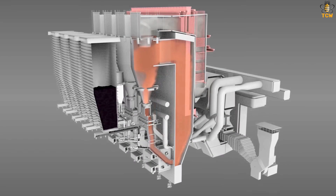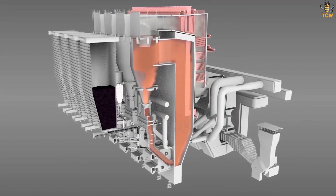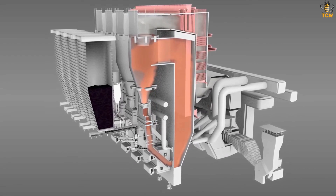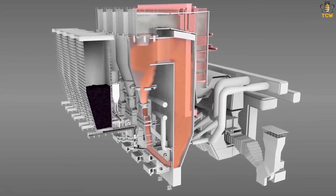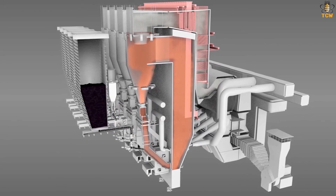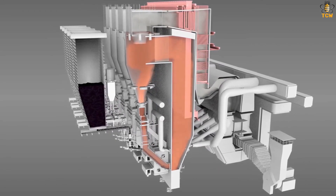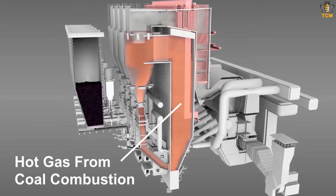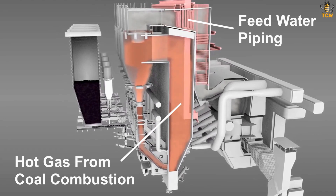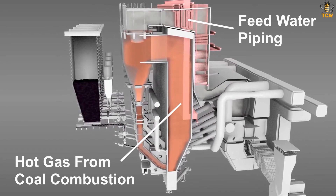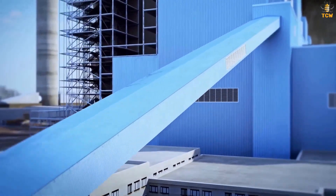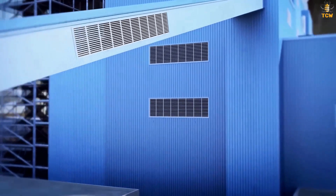Boilers work by transferring heat from the flow of hot gases due to the coal combustion process. This heat is absorbed by the water that comes from the steam condensation process coming out of the turbine. To understand how a boiler works, you need to know about the flow of hot gas from the coal burning process and the flow of feed water to steam. These two flows occur in the boiler simultaneously. We will explain the flow of hot gas from the coal combustion process first.